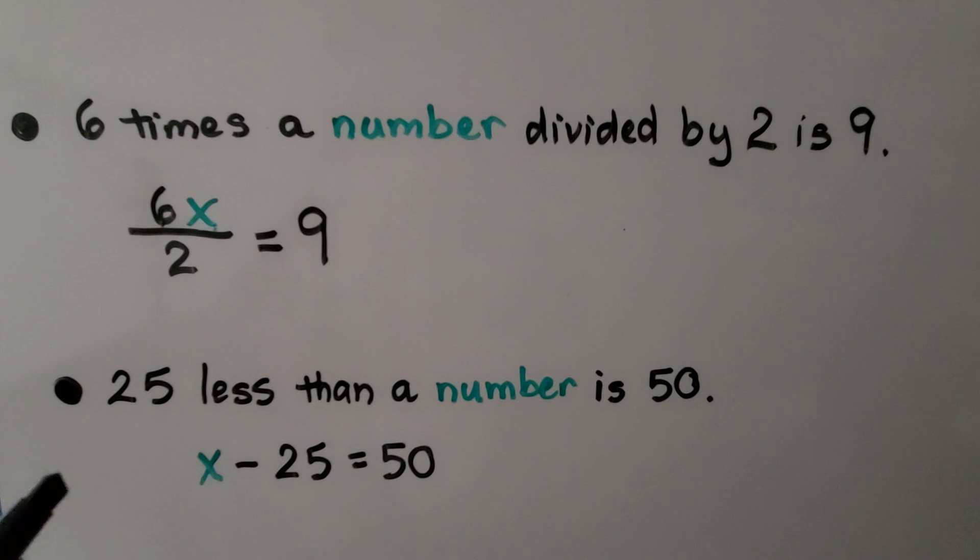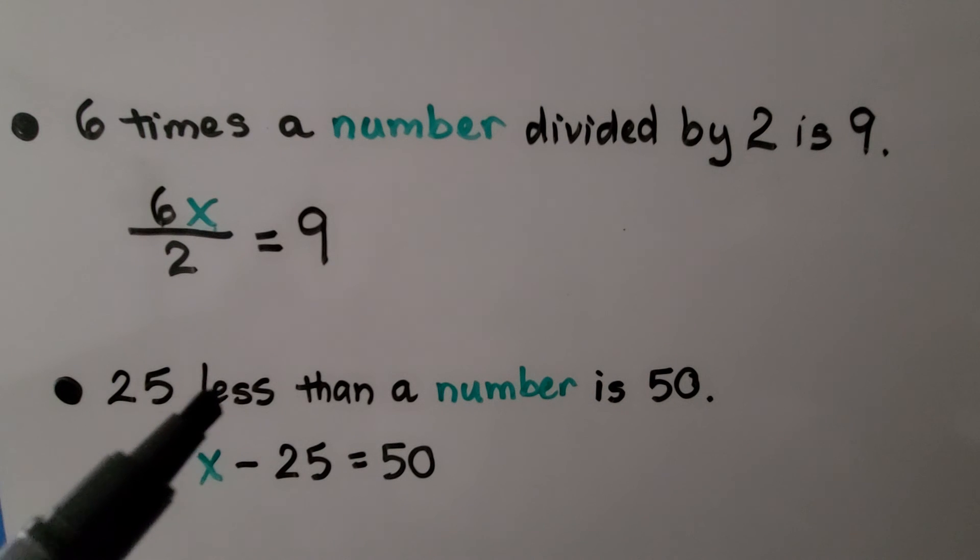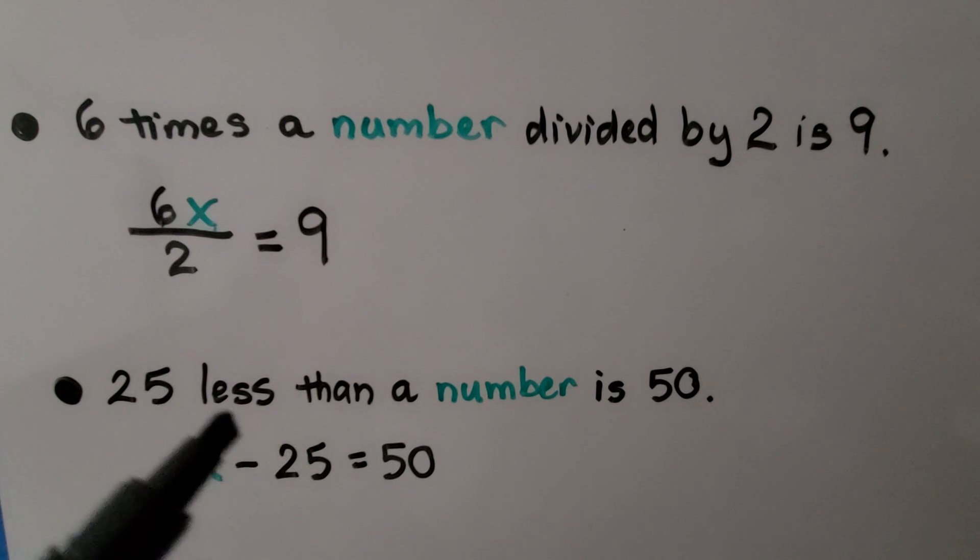Here we have 25 less than a number is 50. If it's 25 less than some number, then it's some number minus that 25, and it's equal to 50.